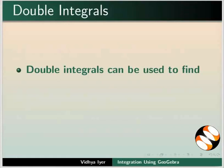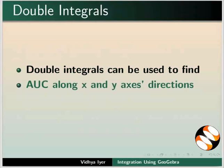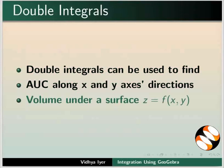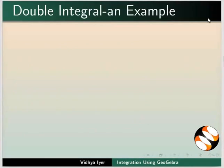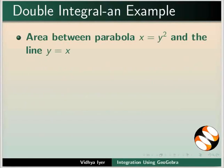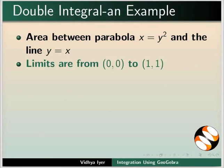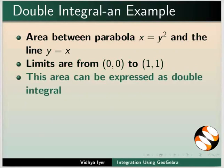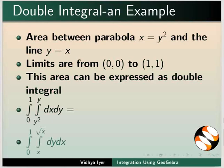Double integrals. Double integrals can be used to find the area under a curve along x and y axis directions, and the volume under a surface z which is equal to f(x, y). Double integral example: Let us find the area between a parabola x equals y squared and the line y equals x. The limits are from (0, 0) to (1, 1). This area can be expressed as the double integrals shown here.